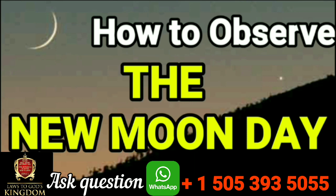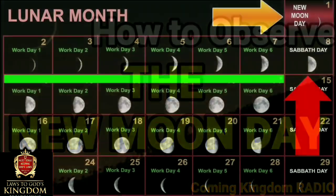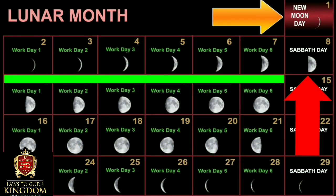There is a difference between the Sabbath and the New Moon — they are not the same. There are three types of days: New Moon Day, Work Day, and Sabbath Day.